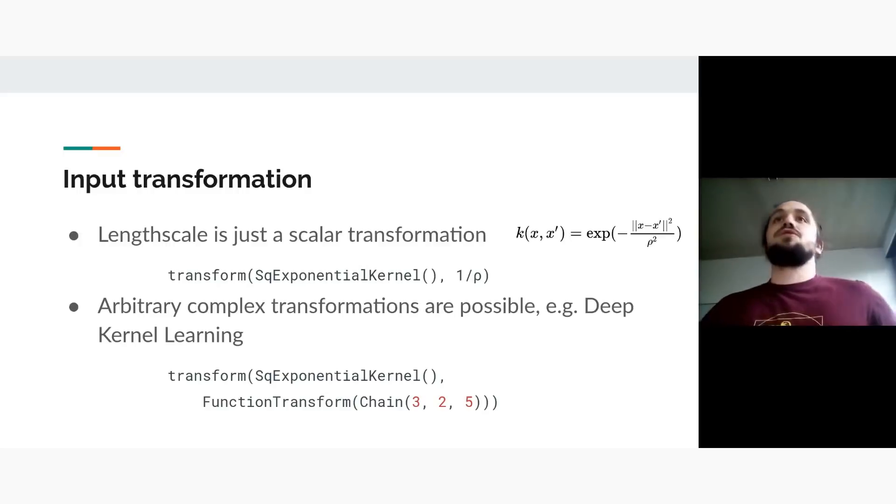What else we did is that usually in most kernels, you would get some kind of parameters. For example, for the square exponential, it always comes with this rho, which is a length scale. And this rho basically gives you a notion of distance between points. And instead of having every kernel possessing its own parameters, we decided to make a more generic approach and basically transform the inputs beforehand and eventually get equivalences between this transformation and some classical kernels. So for example, to get the same result as this kernel, we just transform it with one over rho. So every input will be multiplied by one over rho and you'll get the same behavior.